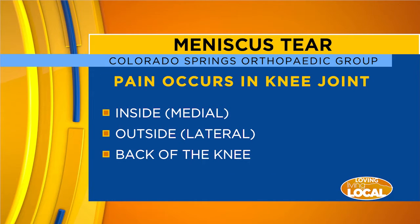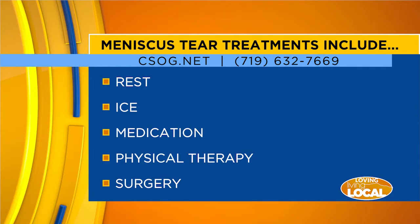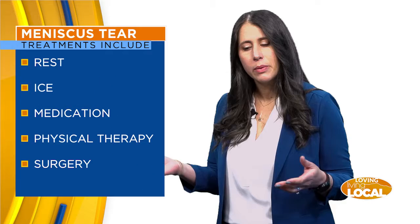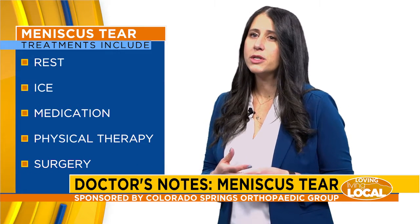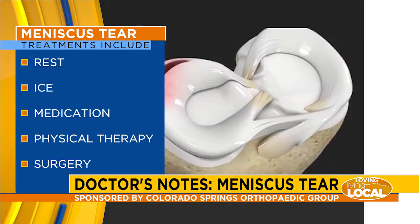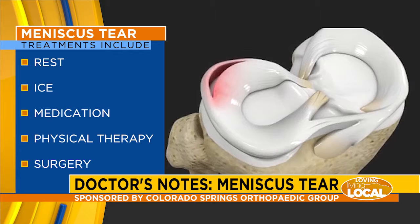These meniscus tears can propagate and get worse over time if they're left untreated. Degenerative tears oftentimes are treated very simply with a meniscectomy, where we trim out just the part of damaged meniscus. Whereas an acute tear in a younger patient typically requires putting stitches in the meniscus to fix it and let it sew back together.